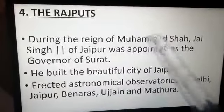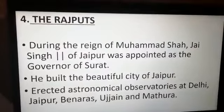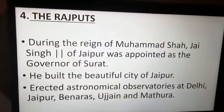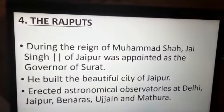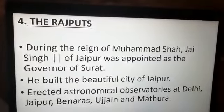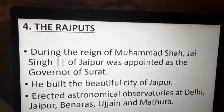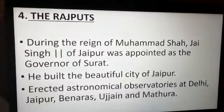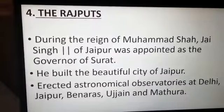During the reign of Muhammad Shah, Jai Singh II of Jaipur was appointed as the Governor of Surat. He was an outstanding Rajput ruler and the founder of the Pink City of Jaipur. He also took interest in science and astronomy. However, the Rajputs were involved in mutual rivalries and failed to unite against external powers. With the rise of the Marathas, their influence began to deteriorate and the Rajputs lost their dignity and rule.